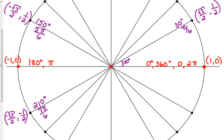And then let's do the one in the fourth quadrant. Its x-coordinate is positive √3/2, but we went down, so the y-coordinate is negative 1/2. And we are 30 degrees short of 360 degrees, so we are at 330 degrees, or 11π over 6.